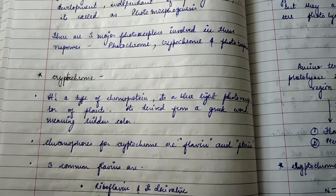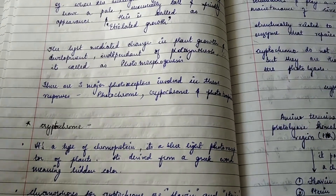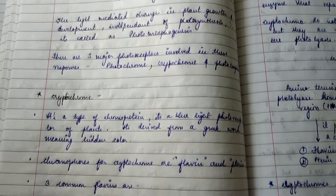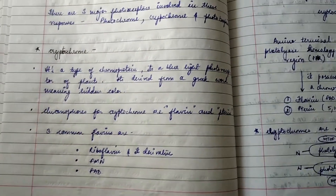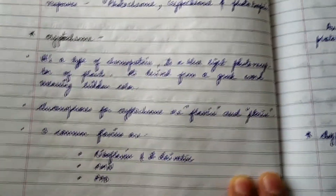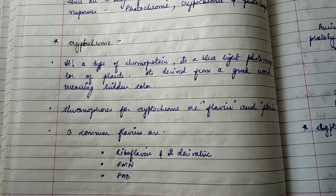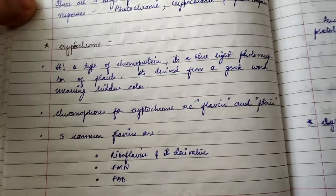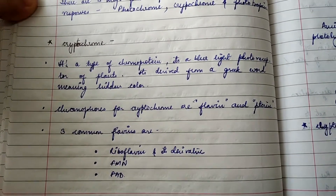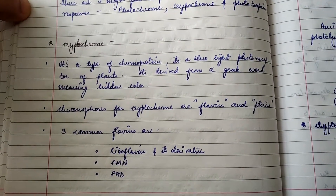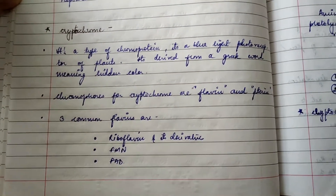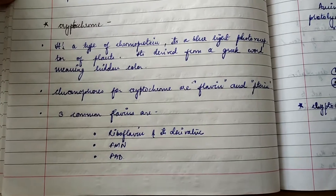In this video, out of the three photoreceptors involved in photomorphogenesis, we'll be talking about cryptochrome. Cryptochrome is a type of chromoprotein and a blue-light photoreceptor of plants. It is derived from a Greek word meaning 'hidden color.'